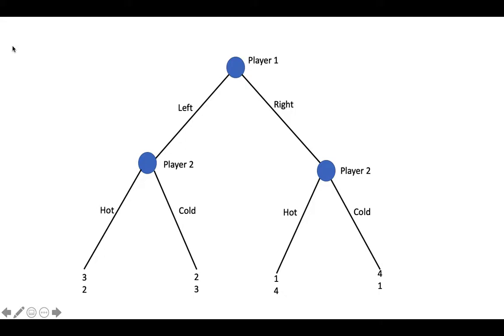The payoffs at the terminal nodes tell us how each player ranks the four possible outcomes. By convention, we always list first the payoffs of the player who moved first. Based on this, we know that Player 1 likes right-cold the best, left-hot second best, left-cold third best, and right-hot fourth best.